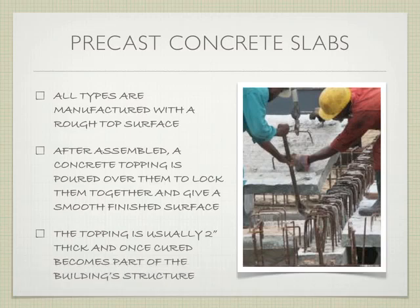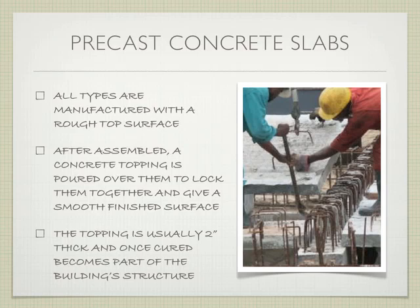All precast concrete slabs are manufactured with a rough top surface — it's intentionally rough, not finished the same way as a slab you'd stand on. After assembly, after we put all the pieces together next to one another, we pour a topping layer over them on site that ties them all together. This provides structural continuity between pieces and also gives us the opportunity to put a nice finished surface on the concrete.